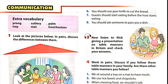Unit 4, page 43, Communication, Activity 3. Now, listen to Nick giving a presentation on table manners in Britain, and check your answers. In the UK, we eat around the dining table. We follow lots of table manners. Firstly, we use cutlery — you know, knives, forks and spoons — to eat most of the food.